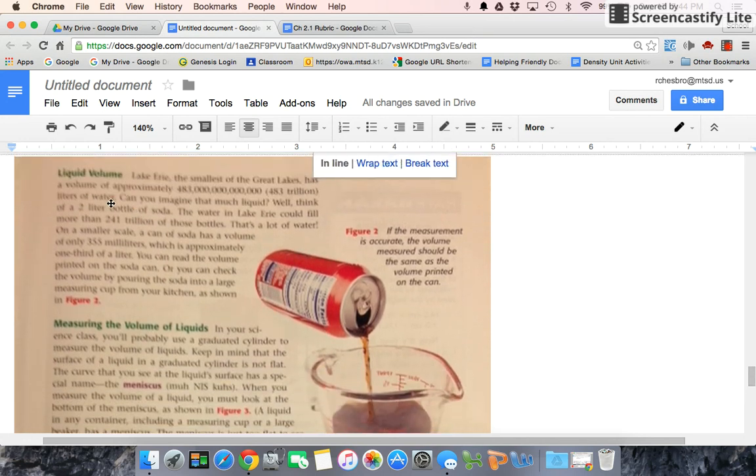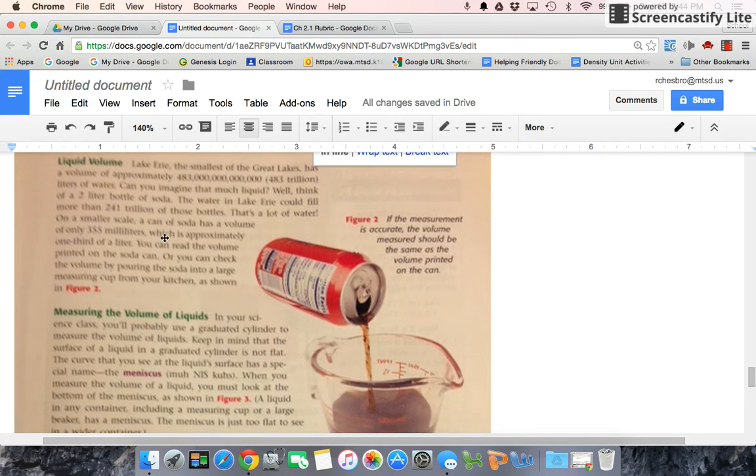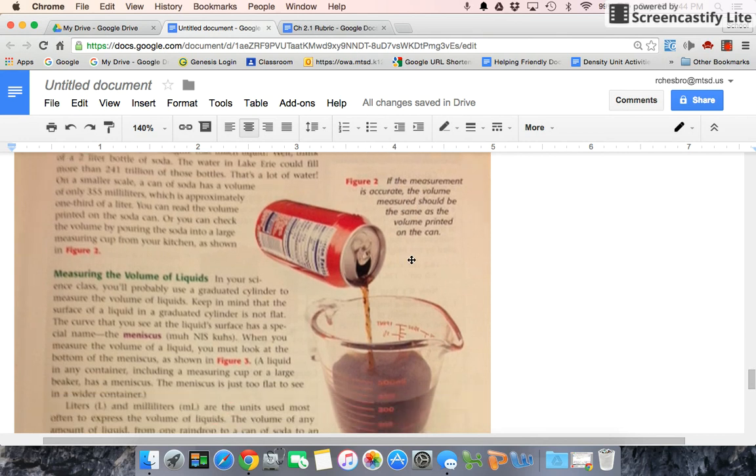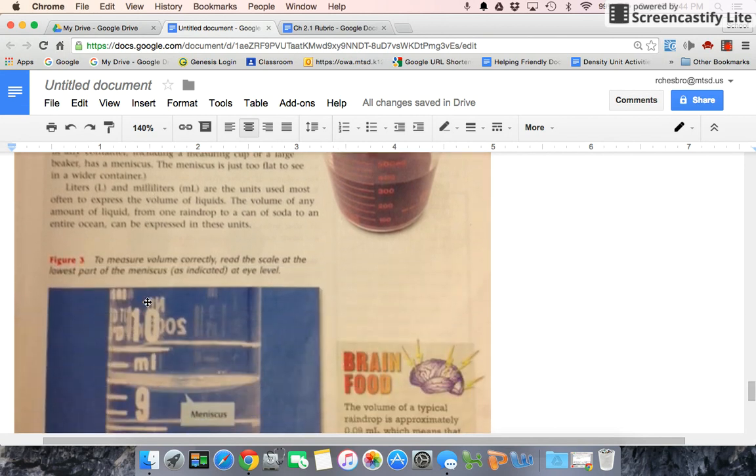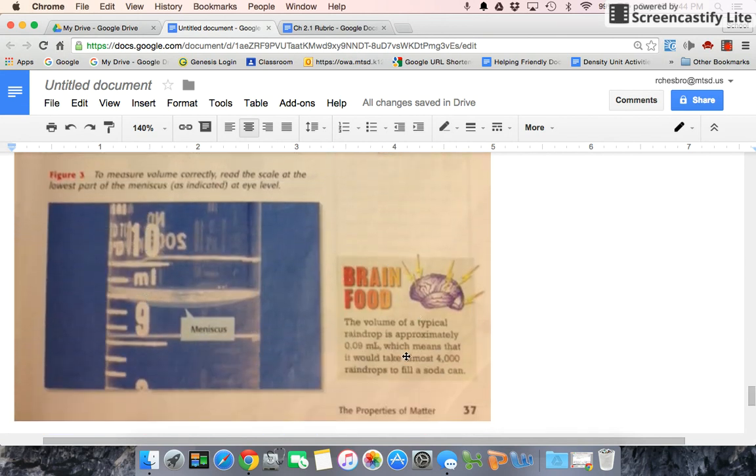Here's the second page. We get to our first green section and then our second green section. Don't forget, we've got some good examples in here talking about liquid volume. Here's another example. Here's something you can relate to. Here's a term, the meniscus. Here's a little side on brain food, kind of an interesting little thing here. And then a good picture.